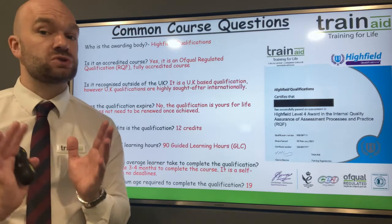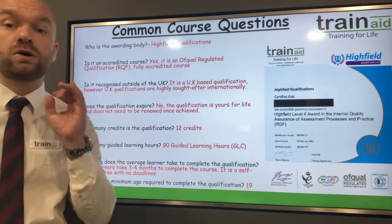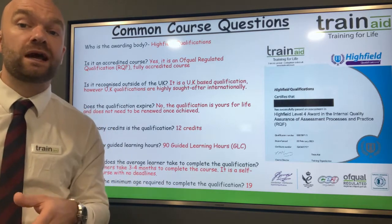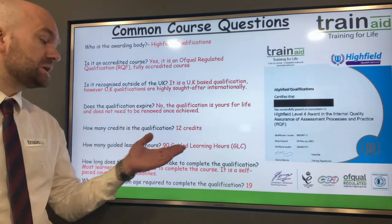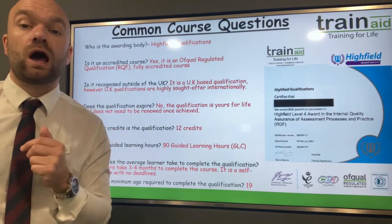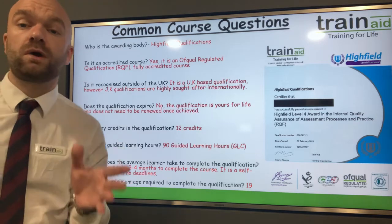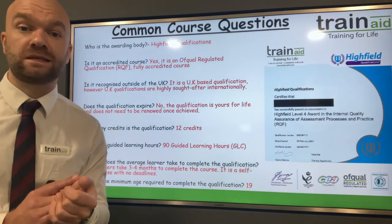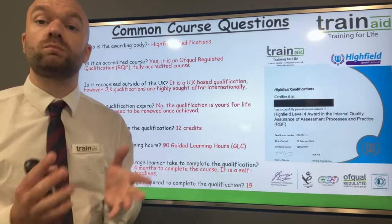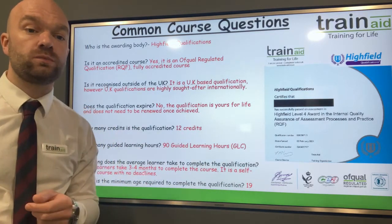In terms of the qualification credits, there are 12 credits to this qualification. The suggested learning hours is 90 guided learning hours, so it's very much a self-paced course and you can work through both units at your own pace. What is the most common timeframe for learners completing this qualification? It takes most learners between three to four months to gain that IQA certificate.